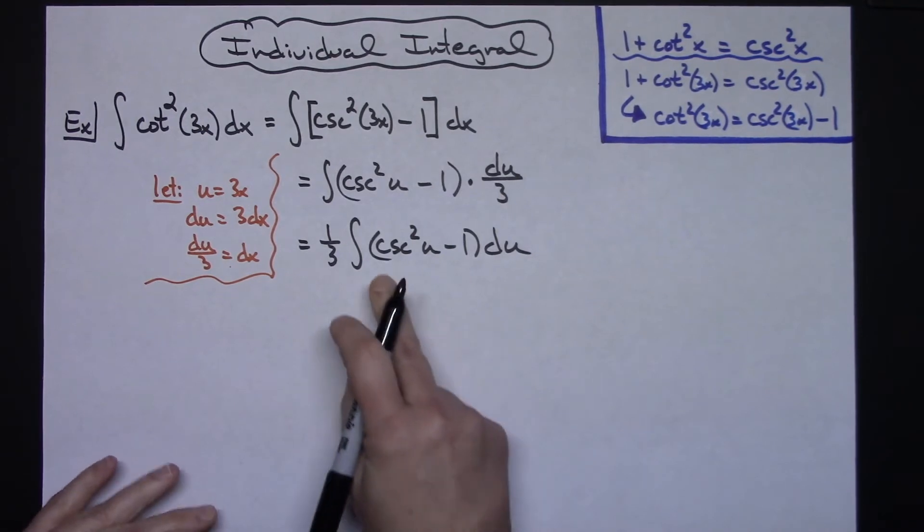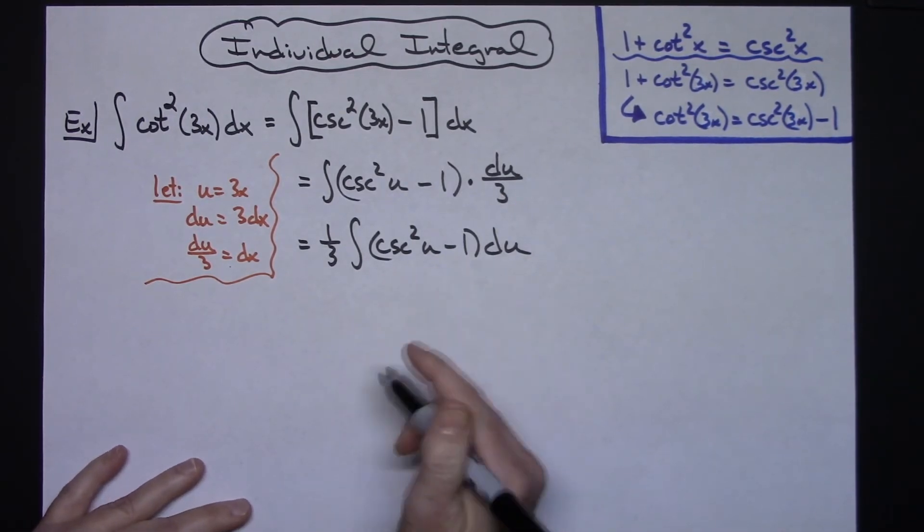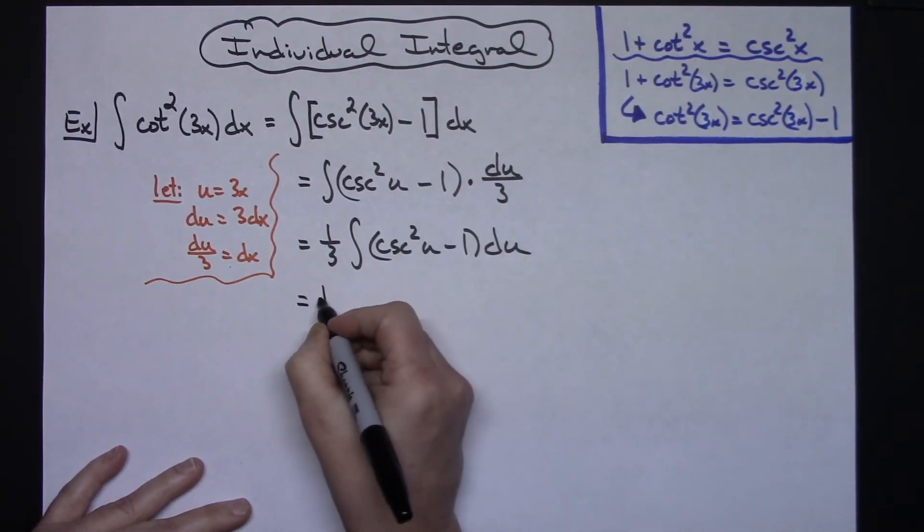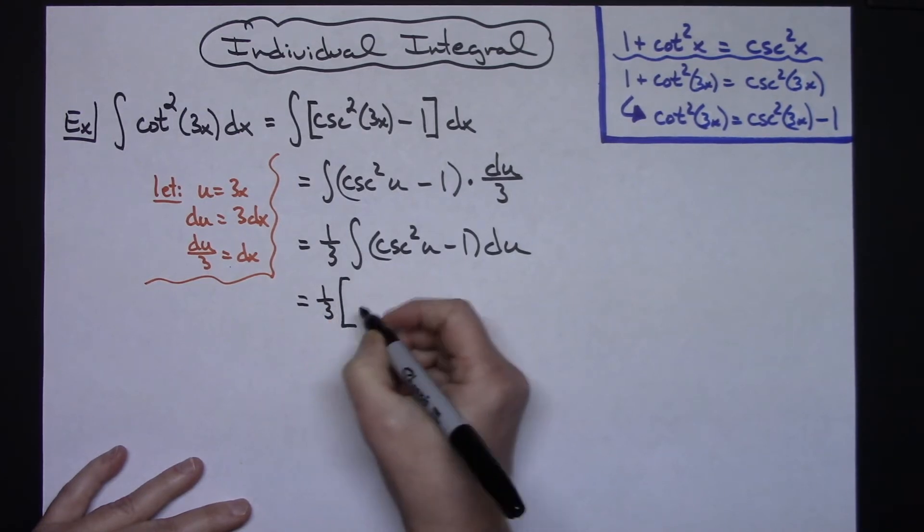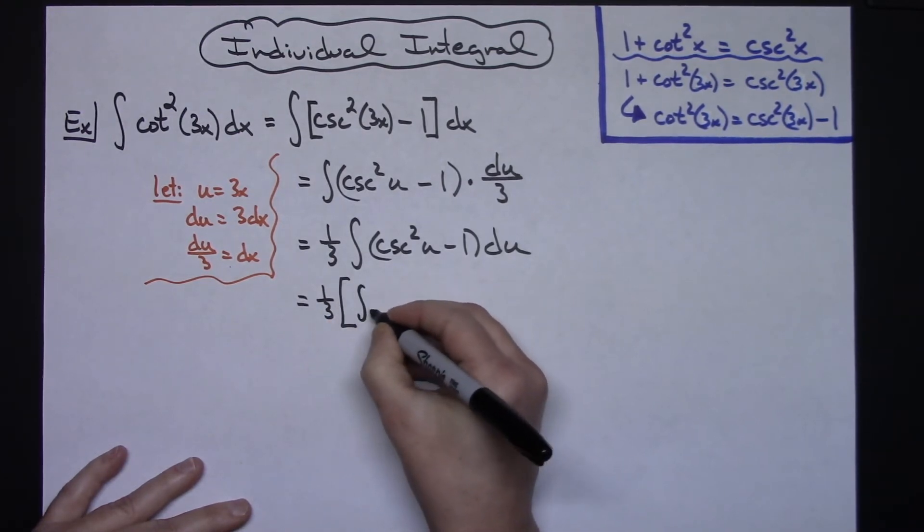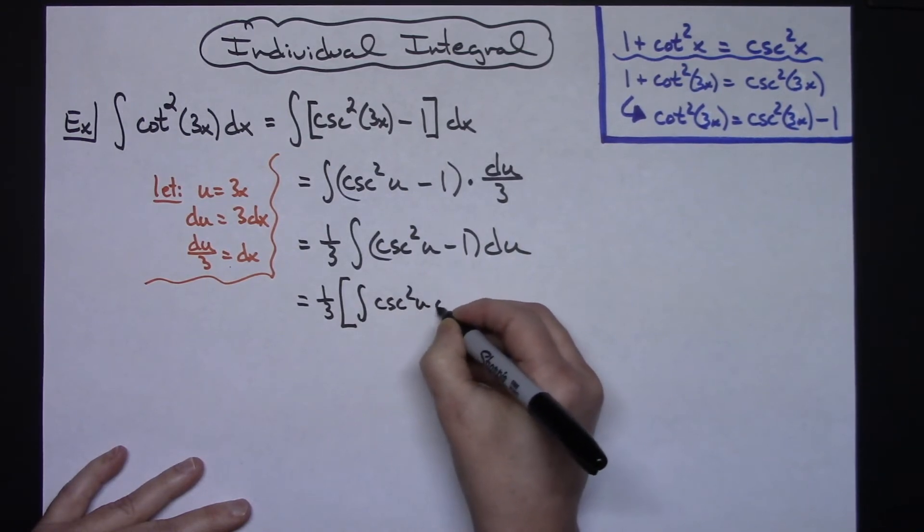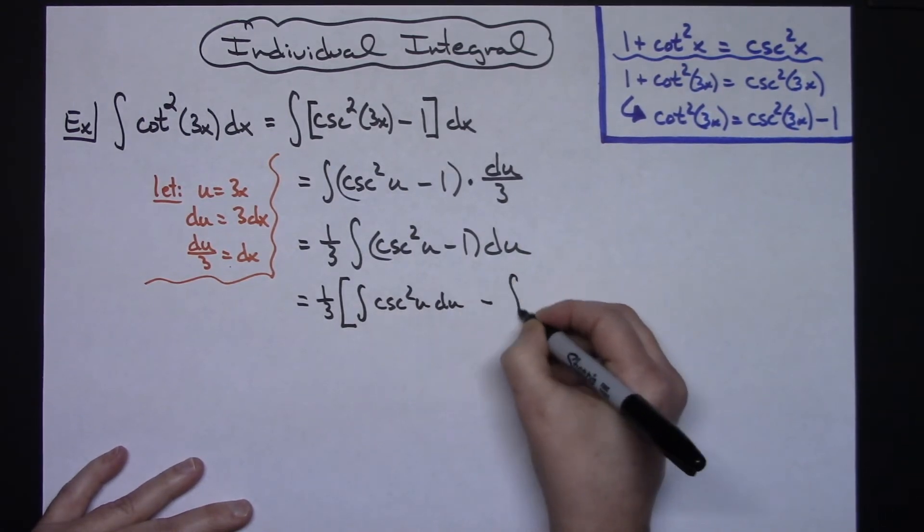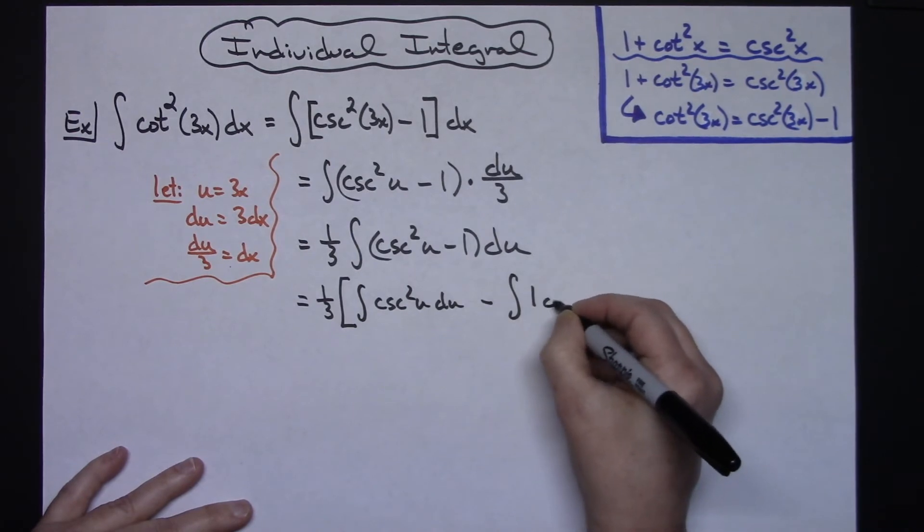From here I'm going to separate this into two individual integrals. So I'll have 1/3 times the integral of cosecant squared u du minus the integral of 1 du.